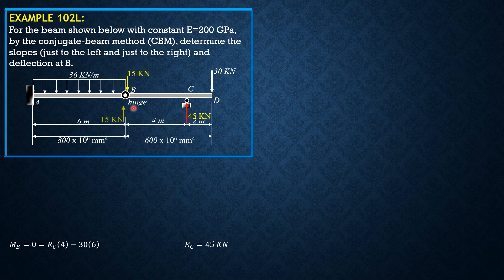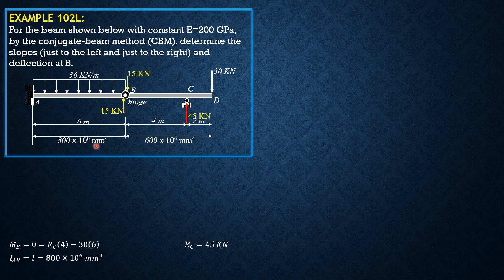By the action-reaction principle, the shear just to the left of B is 15 kilonewtons. Now, segment AB has a moment of inertia of 800×10⁶, while BCD has 600×10⁶. Taking I of AB as the reference I (800×10⁶), then I of BCD equals 600/800 times I, which is 0.75I, or three-fourths of I_AB.